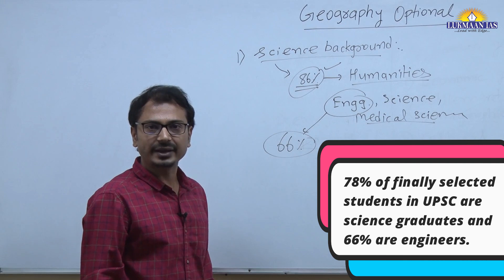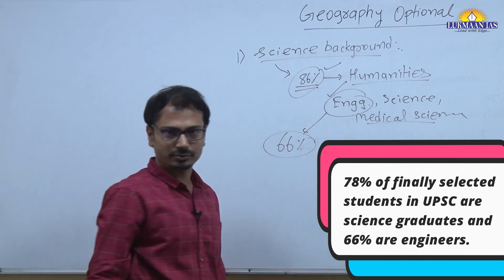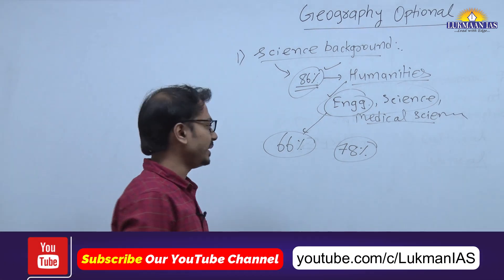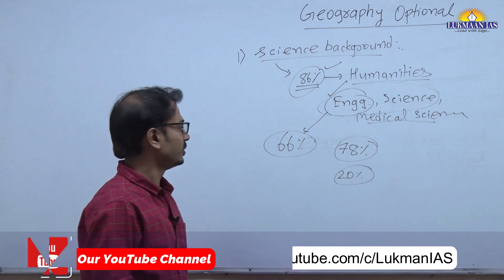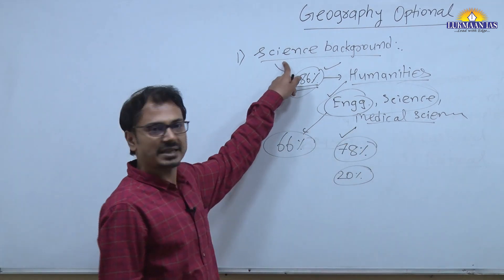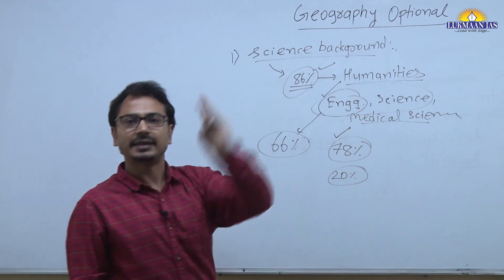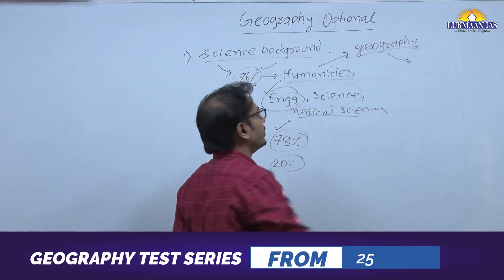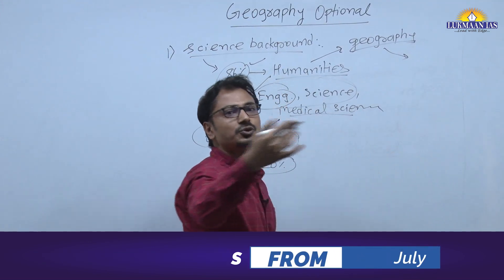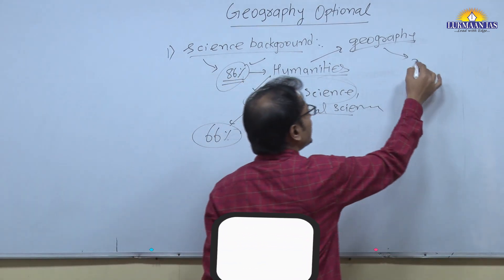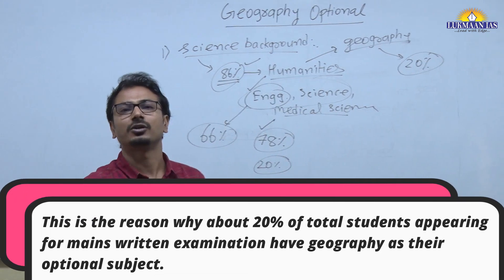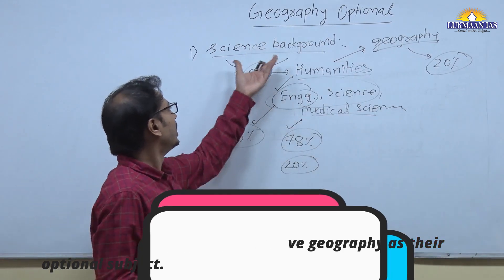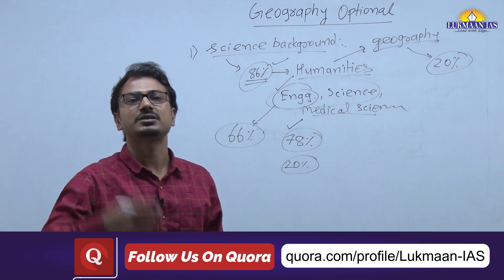About 66 percent of students finally selected in UPSC examination have an engineering background, and 78 percent are from engineering and science backgrounds combined, with the remaining roughly 20 percent from humanities. Those with a science background mostly opt for humanities optional subjects, and their favorite is geography. In fact, 20 percent of total students appearing for the mains examination have geography as their optional subject.